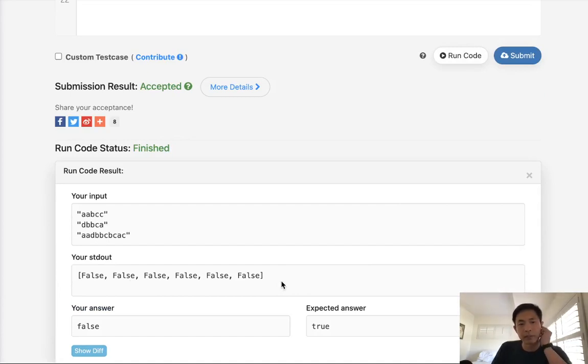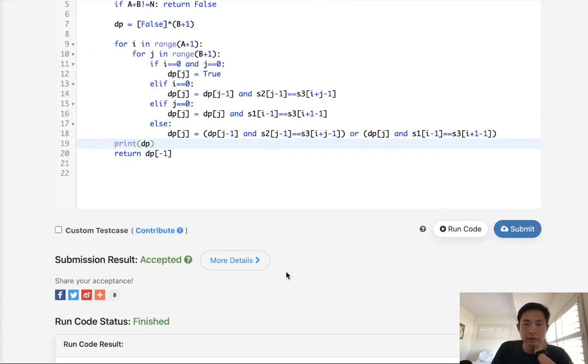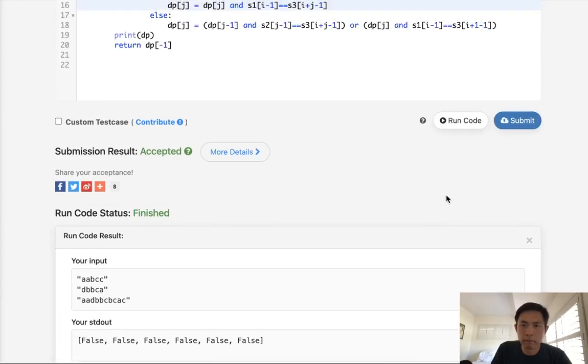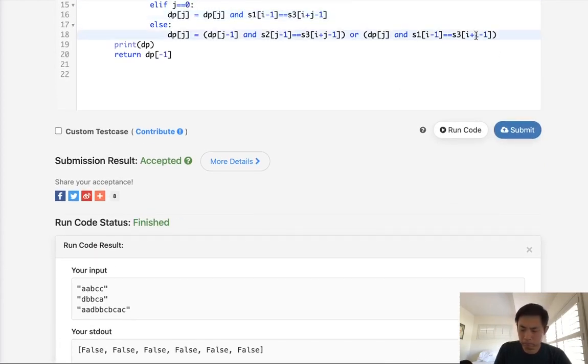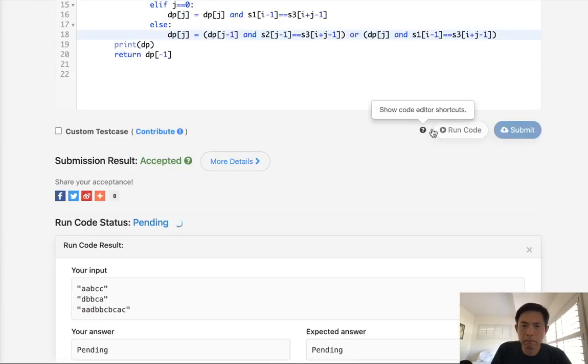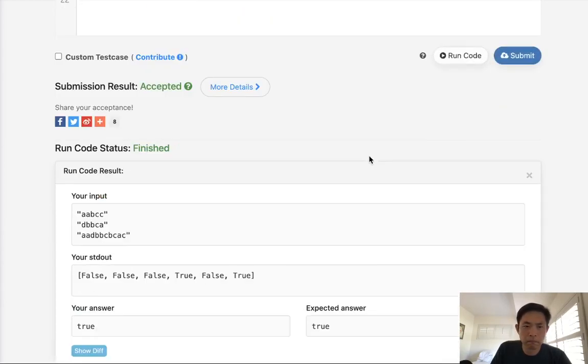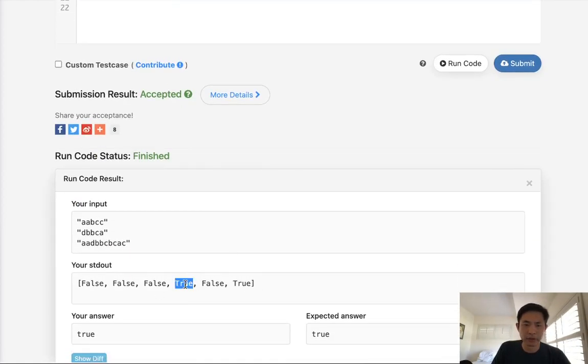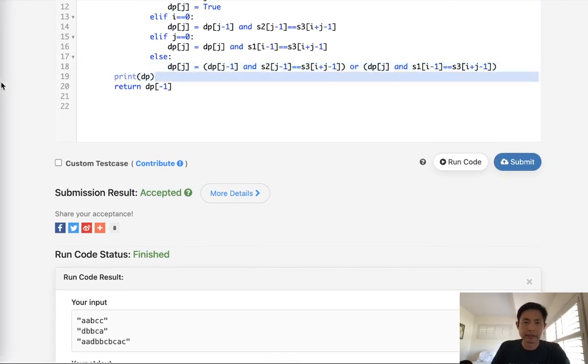Okay so I messed something up here. Let's see, dp of j. Oh okay, I'm sorry, not k, this would be j, there's no k here. Okay, okay so that looks like it's working here, I said true at this point so let's go ahead and submit this. And there we go.